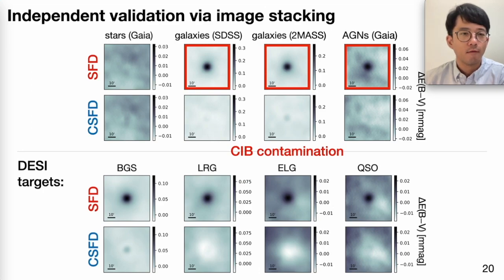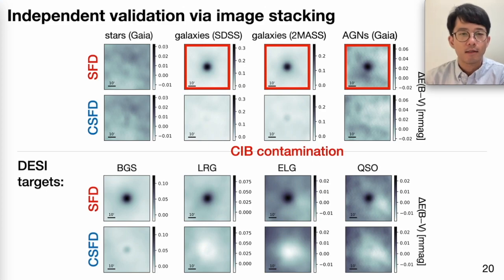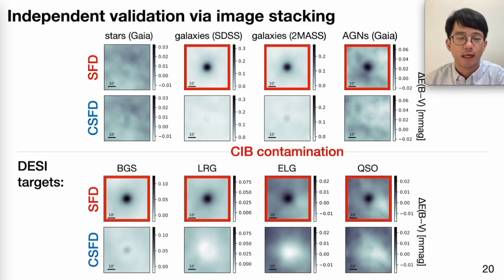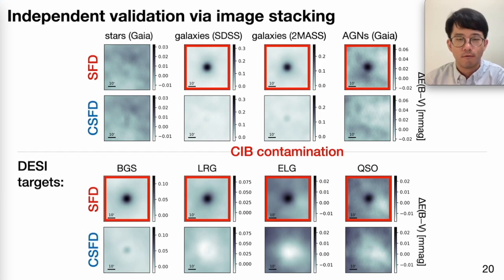Now I show another set of similar stacks, but for DESI targets — photometric DESI targets from the bright galaxy sample, luminous red galaxies, emission line galaxies, and quasars. Again, for DESI targets, which are extragalactic, the CIB contamination is clearly detected in SFD. This means that if we use the SFD dust map to do extinction correction for DESI, it will propagate into the final cosmology results, for example biasing small-scale clustering like neutrino mass constraints.